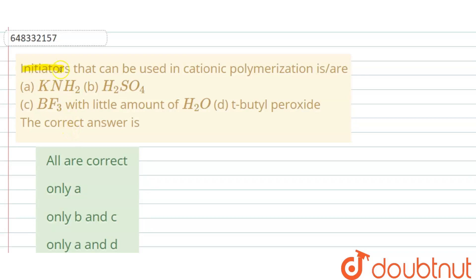The given question is: initiators that can be used in cationic polymerization is or are. In cationic polymerization, the initiator...